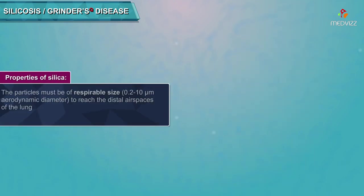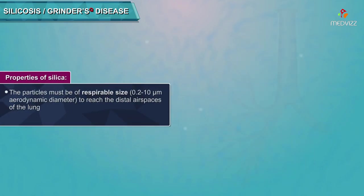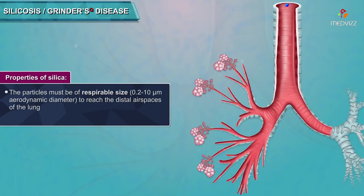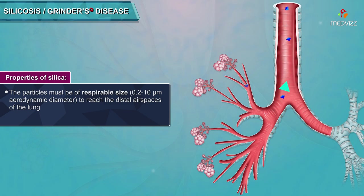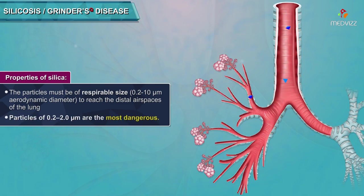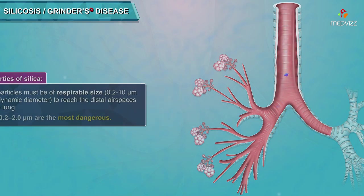Properties of silica: The particles must be of respirable size — 0.2 to 10 micrometers aerodynamic diameter — to reach the distal airspace of the lung. Particles of 0.2 to 2 micrometers are the most dangerous.